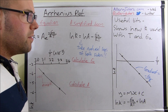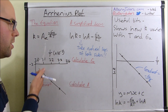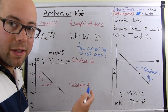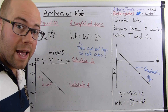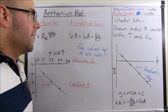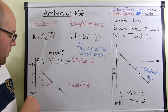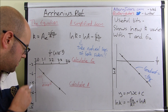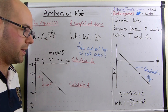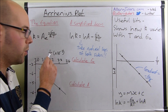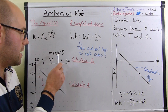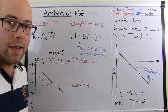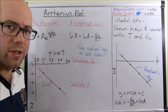Now we're going to use an example with some specific data to calculate activation energy and A, which is our Arrhenius constant. Here's the data — on the side we have lnk values, which you can see are in the negative numbers, so the graph is kind of upside down. Going across we have 1 over T, which in this case is times 10 to the minus 3, so you take any of these numbers and put times 10 to the minus 3 at the end.